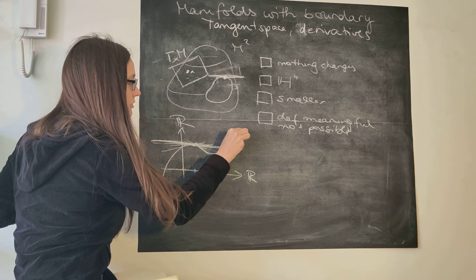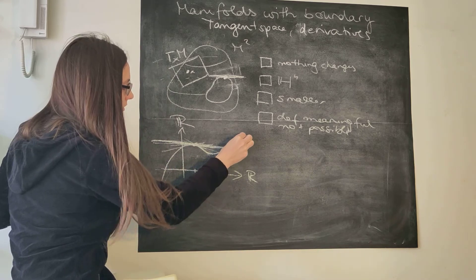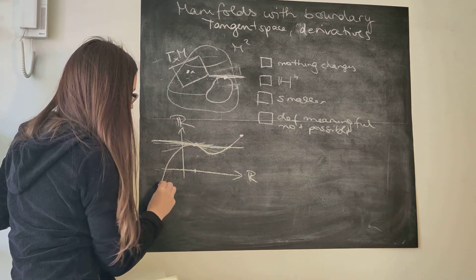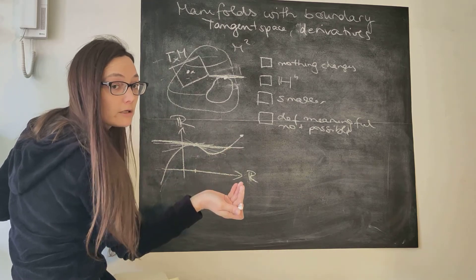So now what if functions just stop somewhere, so you can think of this as a one-dimensional manifold with boundary embedded in R2.